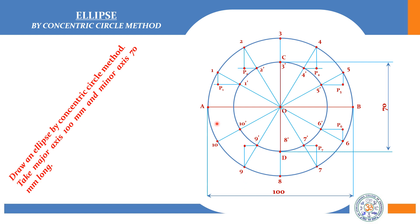This is another method to draw the ellipse. Join A to P1, P1 to P2, P2 to C, C to P4, P4 to P5, P5 to B, and repeat on the lower side. You can draw this curve freehand or using a French curve, which is very handy for obtaining a fine smooth ellipse.